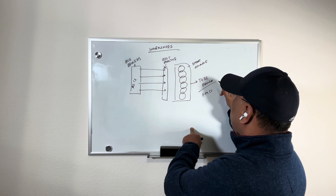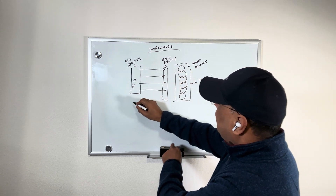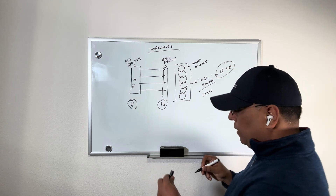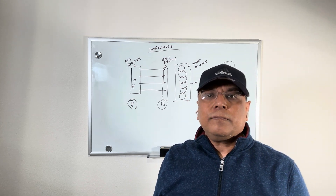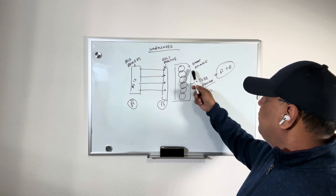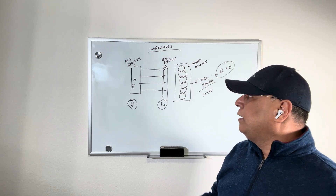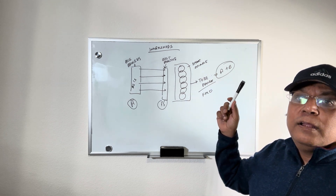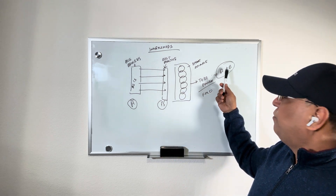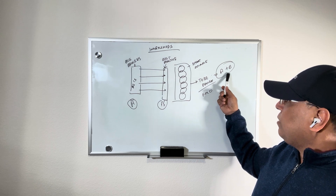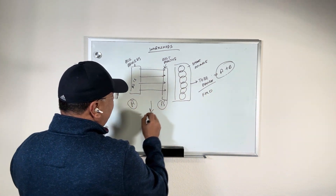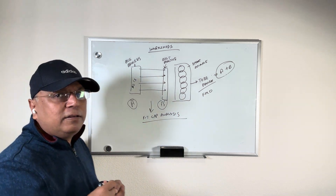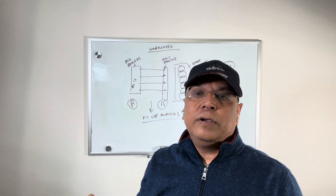The to-be process, or future mode of operation, includes both A and B — a combination of the as-is and the best practice. So the fit gap analysis gives us an effort estimate. We have the best practices, we have the as-is process, and then we have the to-be process, which is the SAP best practice plus the fit gap analysis. The fit gap analysis sits between these two — these are components you cannot use out of the box and need extra effort to make work.